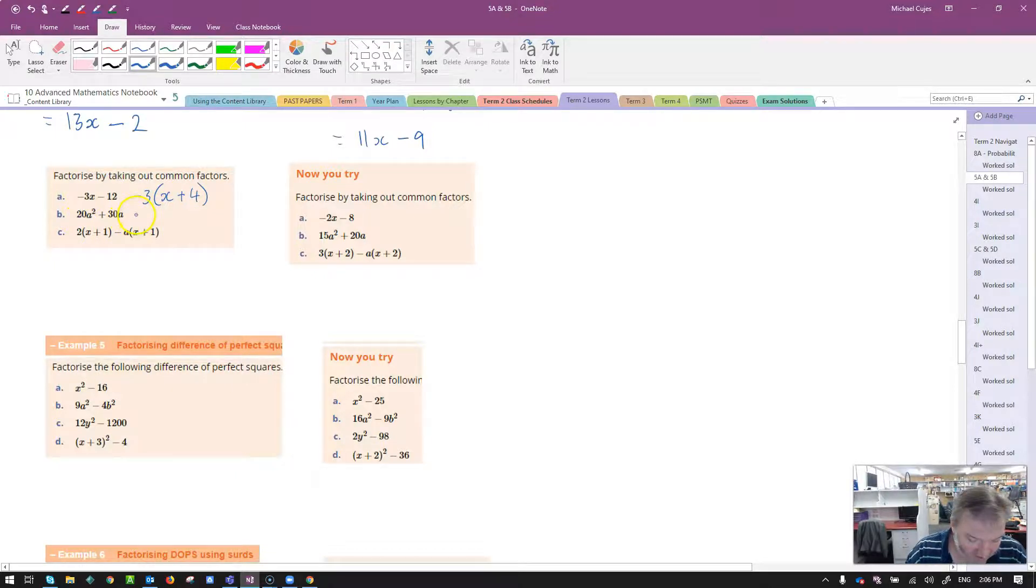The next one here. Highest common factor is going to be 10a. So the numbers, it's going to be 10. Then look at the letters, a squared and an a. The most they've got in common is an a. So you put that out the front. What's left over? Well, to end up with 20a squared, I would need a 2. So 2 times 10 would give me 20, and I'd need an a. And for the second term, 10a multiplied by 3 would get me to 30a.